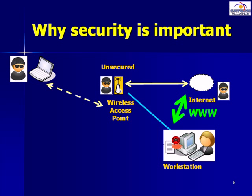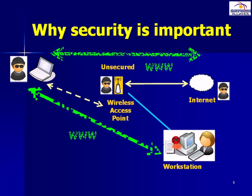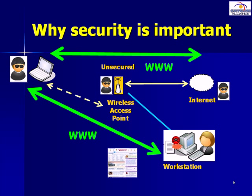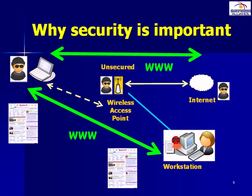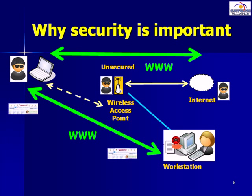Normally the user on the workstation accesses the internet by going directly via the wireless access point they've set up. However, now that the hacker has full control of the network, they're able to download a number of free tools from the internet that allow them to reroute the internet traffic through their workstation rather than through the access point. The result is that any website browsed on the infected workstation can now be viewed directly by the hacker on their machine in real time, resulting in a significant invasion of privacy.